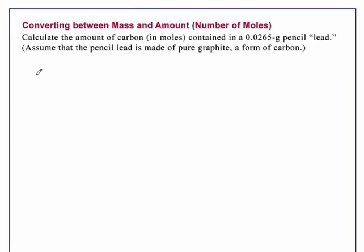Converting between mass and amount, number of moles. Calculate the amount of carbon in moles contained in a 0.0265 gram pencil lead. Assume that the pencil lead is made of pure graphite, a form of carbon.